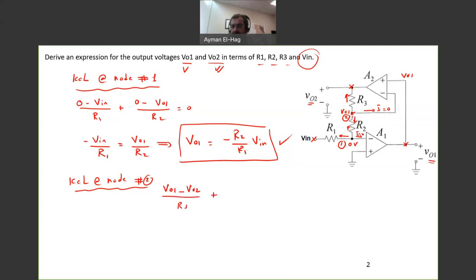VO2 plus the current that goes down, VO1 minus, the voltage here is 0 divided by R2 equal to 0. So we have here VO1 and we have VO2. So let's collect terms. So VO1, open a bracket, 1 over R3 plus 1 over R2 equal to...